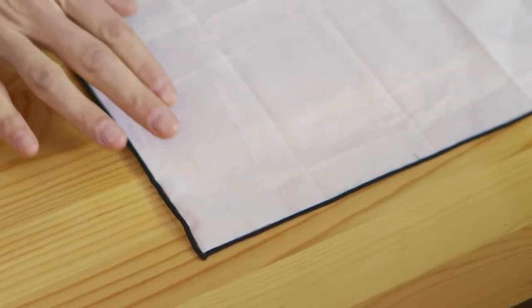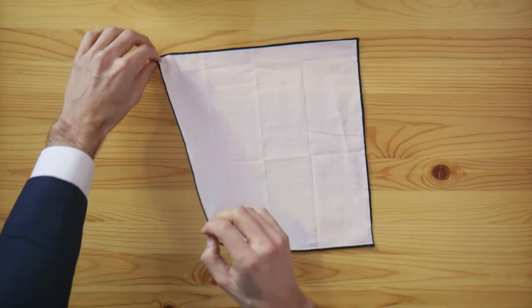Don't forget to hit like and subscribe. Now grab your tux and let's get folding. Lay your pocket square face-down in a diamond shape.